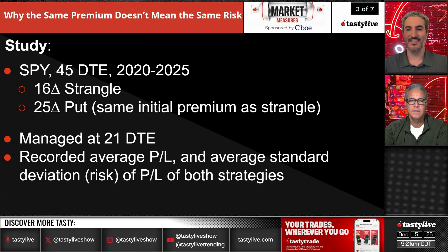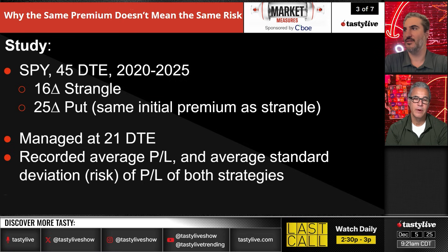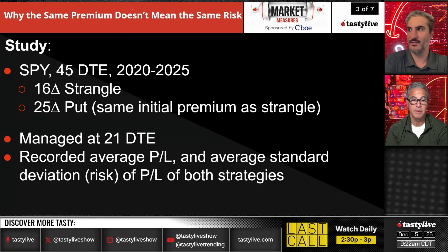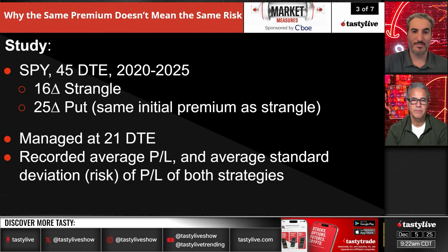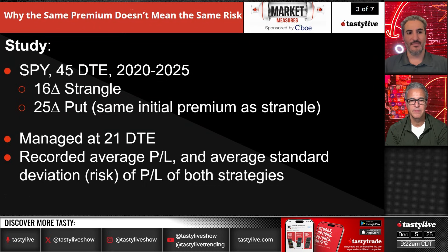What do you think is going to work best in this timeframe? The one with more bullish delta is going to be the one that works, I would imagine, because it's been a mostly up market. That'll obviously influence it, but I think we'll see kind of a mixed bag, as there always is.